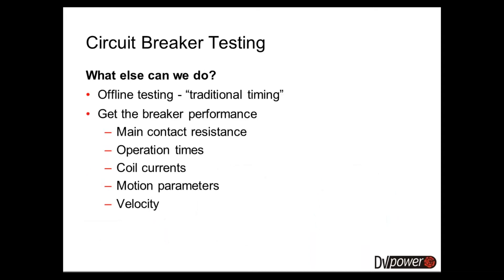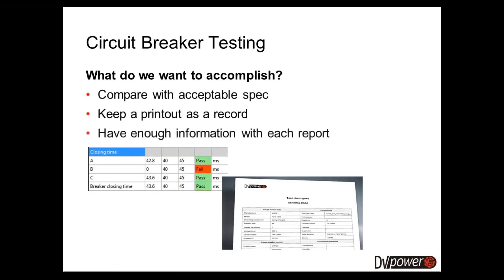Disassembly requires checking the condition of the breaking medium, the condition of the insulation, and of course some other parameters. So we need to search for another solution — the so-called offline testing, also known as traditional timing. When we think of timing, most of us tend to think in terms of contact resistance, timing measurement of the main contact, velocity, bounce, etc. These measurements are critical to circuit breaker operation integrity. Circuit breaker manufacturers provide these operational parameters, and in order to perform these tests, the circuit breaker must be removed from service and grounded for safety reasons.